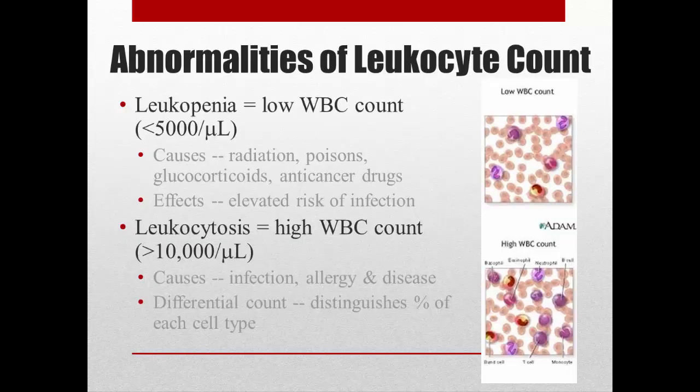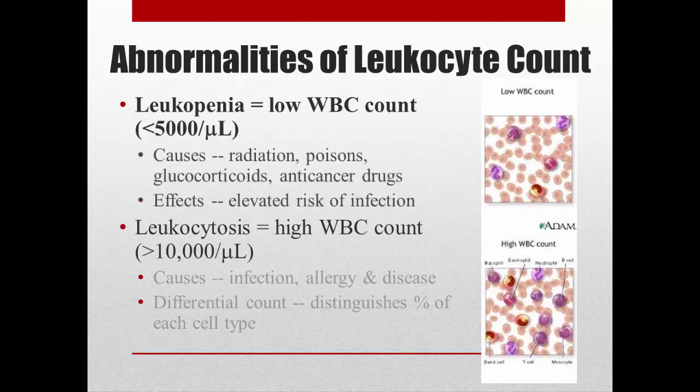Some abnormalities in leukocyte counts are either too many or too few. Leukopenia is low white blood cell counts, seen with things like radiation, poisoning, or anti-cancer drugs that affect bone marrow and limit stem cell numbers — which also affects platelets and red blood cells. Glucocorticoids also lower white blood cell counts because cortisol's job includes reducing the immune response and inflammation. Typically with leukopenia, you are more susceptible to infection because you lack those white blood cells to fight it.